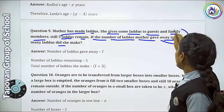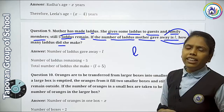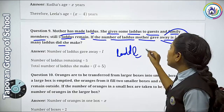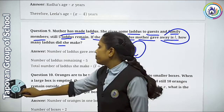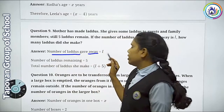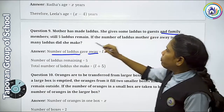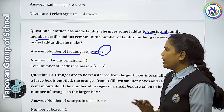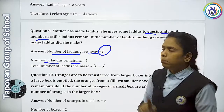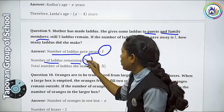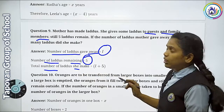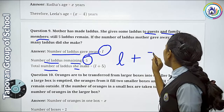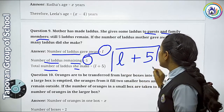So total laddoos — the number of laddoos given away, i.e. given to family members and guests, we assume to be L. Number of laddoos remaining = 5. So total number of laddoos she made = L (given away) + 5 (remaining) = L + 5.